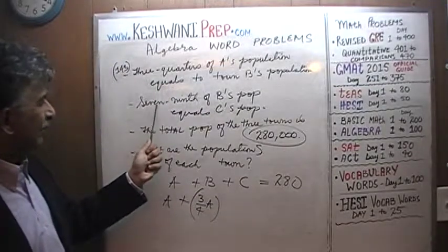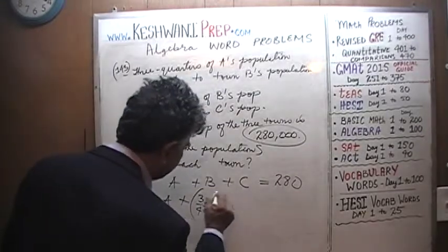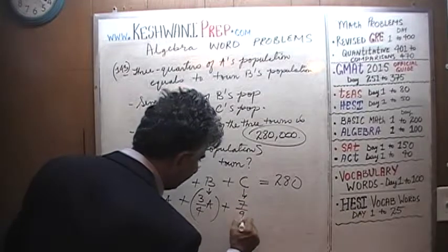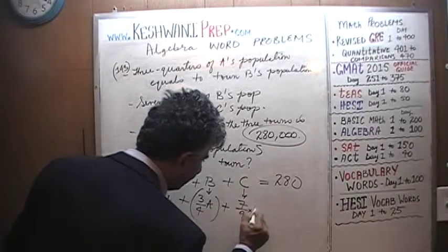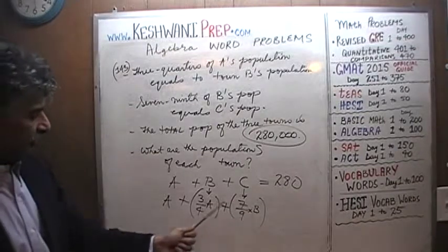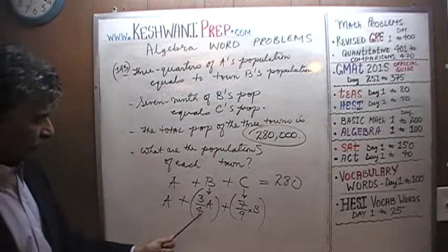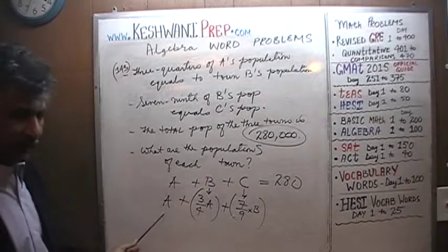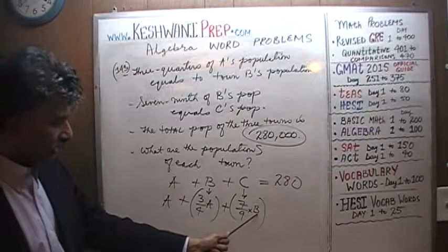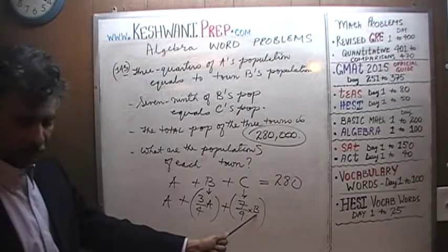Population of C we are told is seven ninths of B. But B we know — B in turn equals three quarters of A. We can't leave it like this because otherwise we will end up with two variables. So we are going to make the substitution one more time: B we know is three quarters of A, so we are going to put that in place of B.